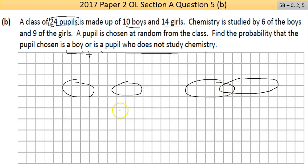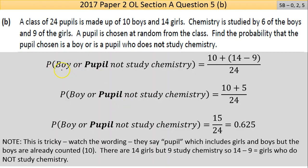So the probability of a boy or pupil not studying chemistry: There are 10 boys, so 10 out of 24, and that's added to—so 'or' means add—the number of pupils not studying chemistry is 14. Take away the nine girls because the girls can't be counted as boys. That's 14 take away 9 divided by 24.